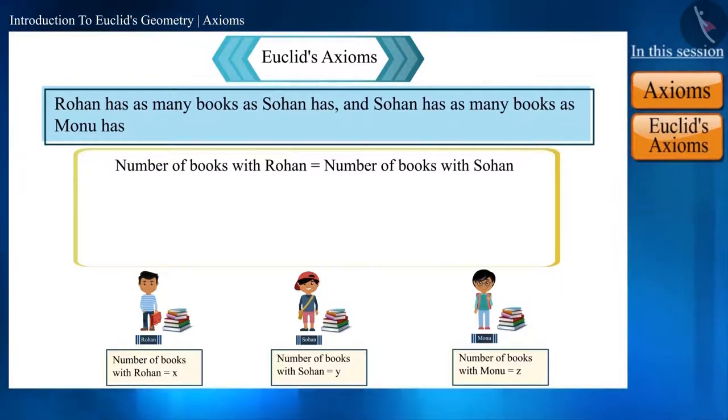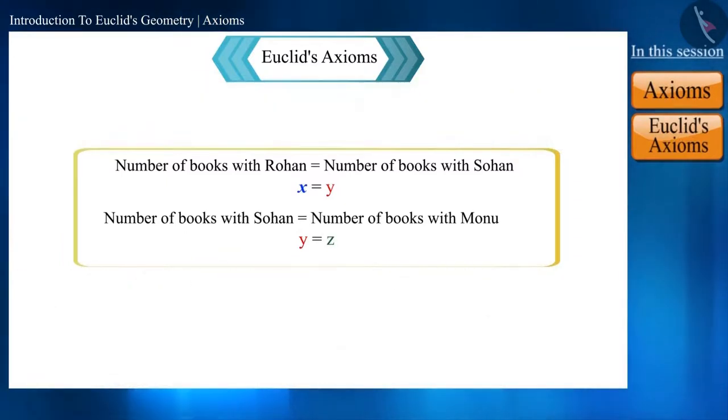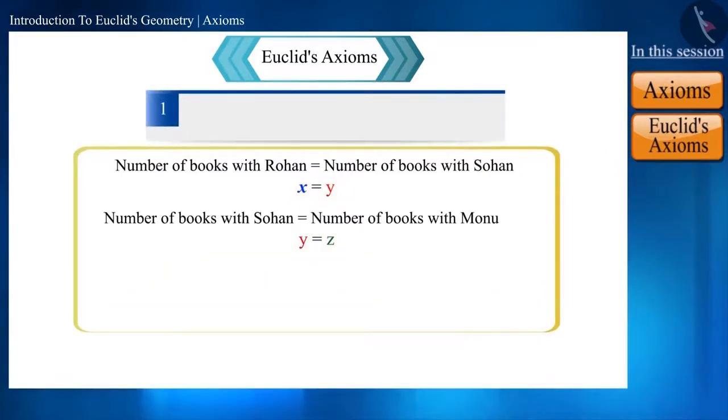According to the statement, Rohan has the same number of books as Sohan, that is we can say that x equals y. And given that Sohan has the same number of books as Monu, that is y equals z. Note here that x equals y and z is also equal to y.